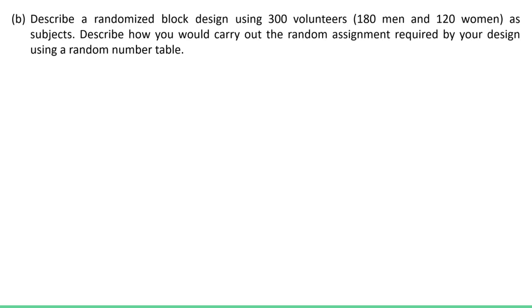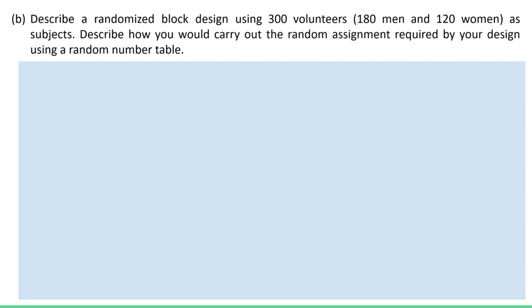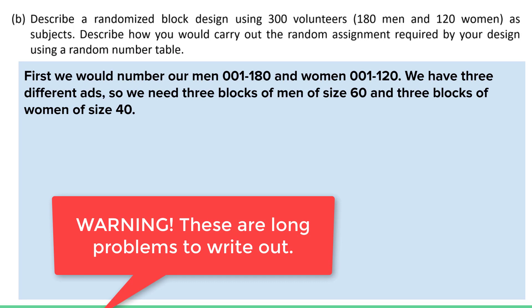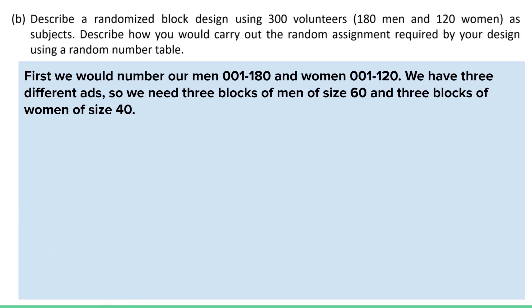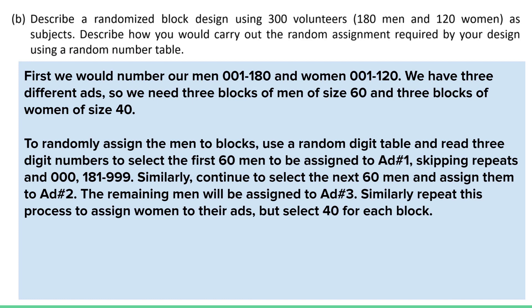Describe how you would carry out the random assignment using a random number table. We would number our men 001 to 180 and women 001 to 120. We have three different ads, so we need three blocks of men of size 60 and three blocks of women of size 40. To randomly assign the men to blocks, use the random digit table and read three-digit numbers to select the first 60 men to be assigned to Ad 1, skipping repeats, skipping 000, and skipping 181 through 999. Then select the next 60 men and assign them to Ad 2. The remaining men will be assigned to Ad 3. Similarly, repeat this process to assign the women to their ads, selecting 40 women for each block.